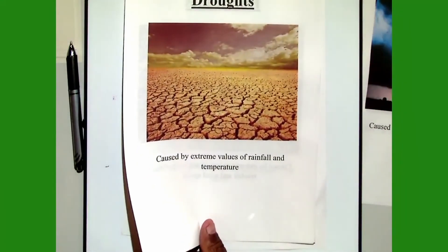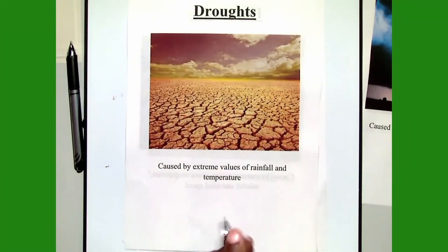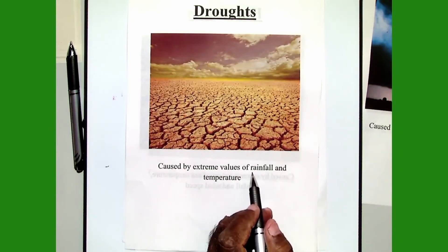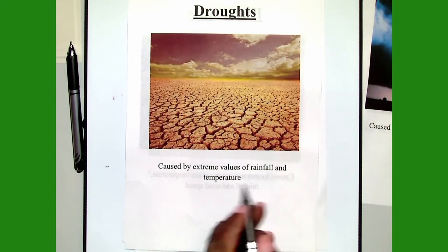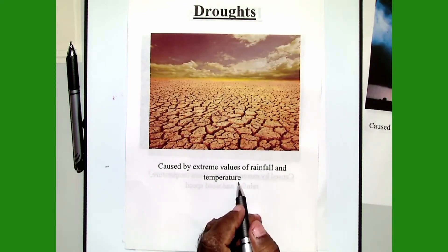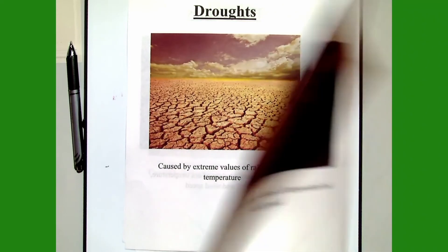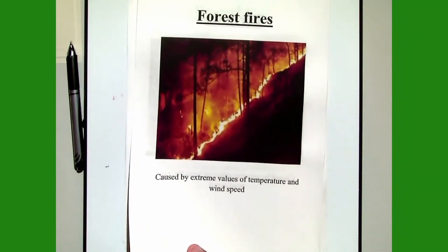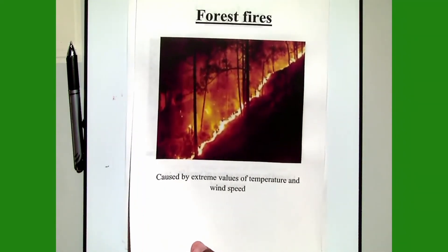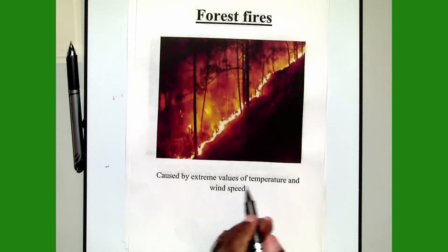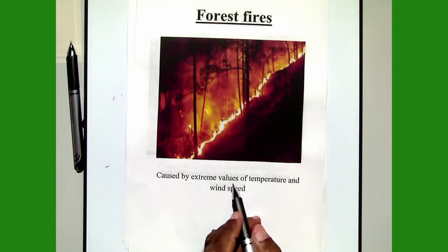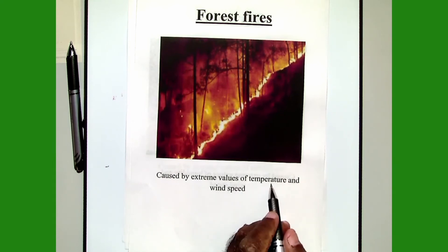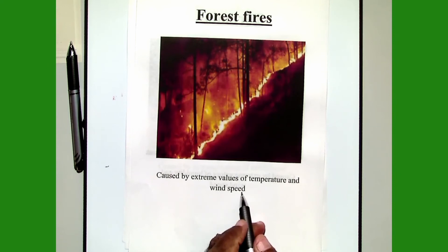The next example is droughts. Droughts are caused by extreme values of rainfall and temperature, so you are interested in extreme values of both rainfall and temperature. And the next example is forest fires, which are caused by extreme values of temperature and wind speed — so you are interested in extreme values of temperature and extreme values of wind speed.